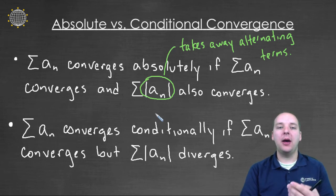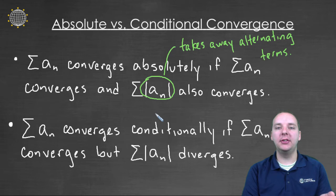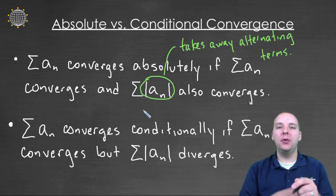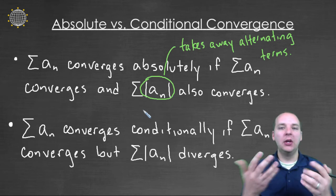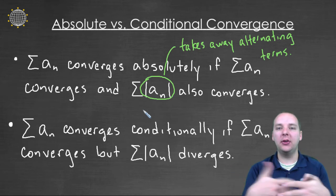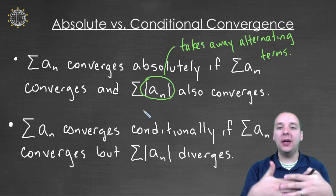Now one thing that we know about having terms that alternate in your series - plus, minus, plus, minus - is that it helps the series converge. Because you have positives and negatives doing a lot of canceling each other out, and that in effect don't even get really added into the sum, the parts that negate each other.